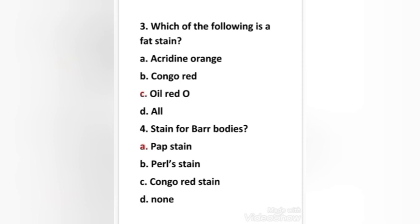Third question: which of the following is a fat stain — acridine orange, Congo red, or Oil Red O? The right answer is option C, Oil Red O. The Oil Red O stain can identify neutral lipids and fatty acids in smears and tissues. Fresh smears or cryostat sections of tissue are necessary because fixatives containing alcohols or routine tissue processing with clearing will remove lipids. Oil Red O is a rapid and simple stain.